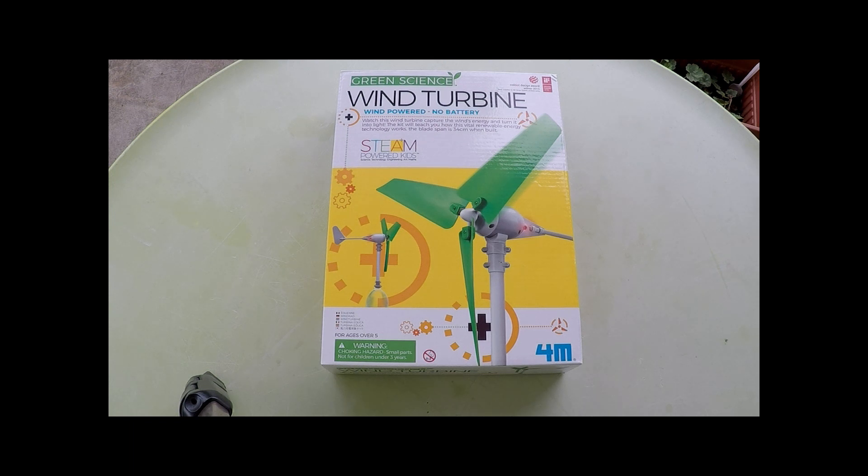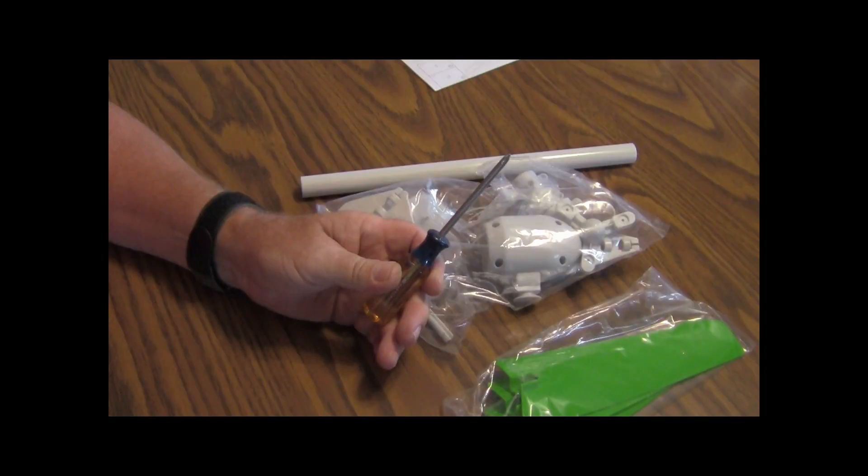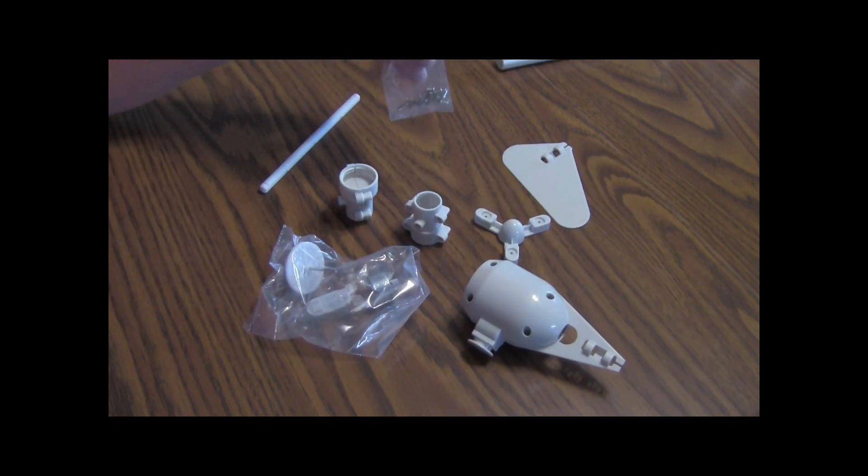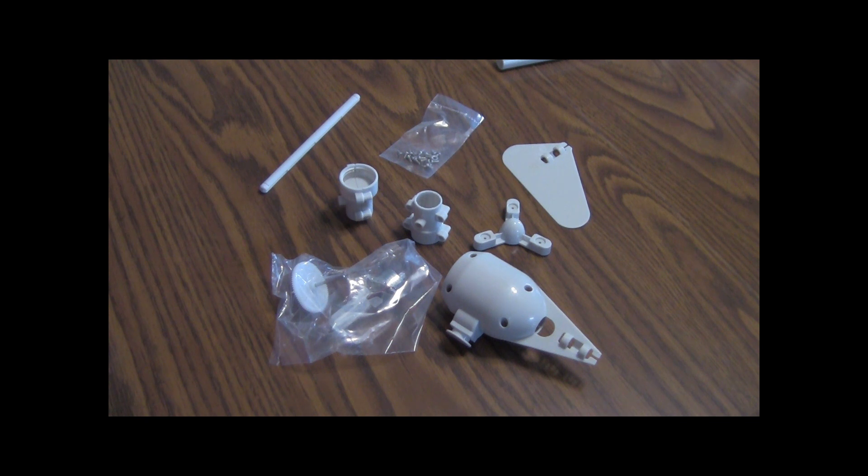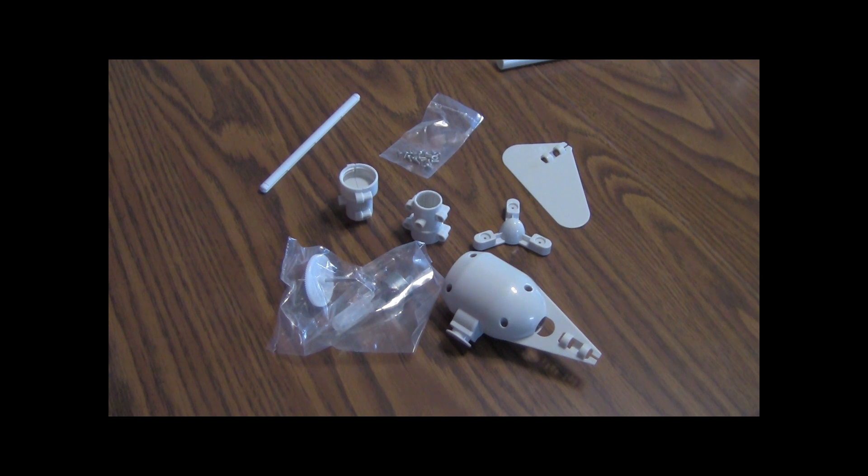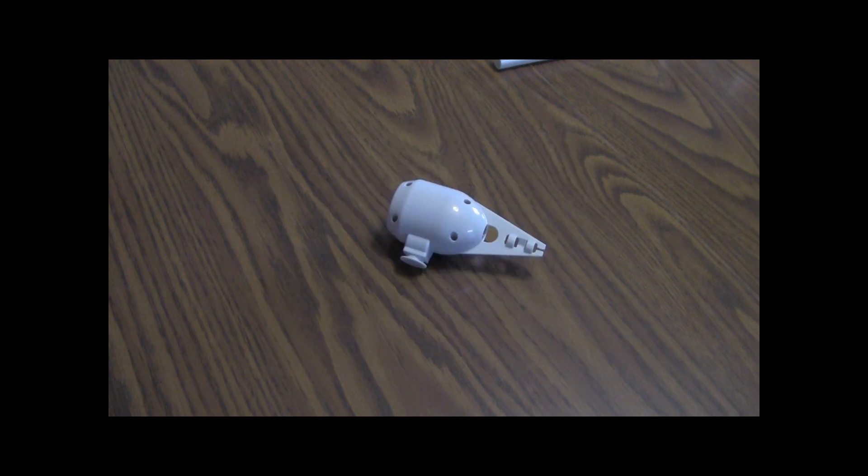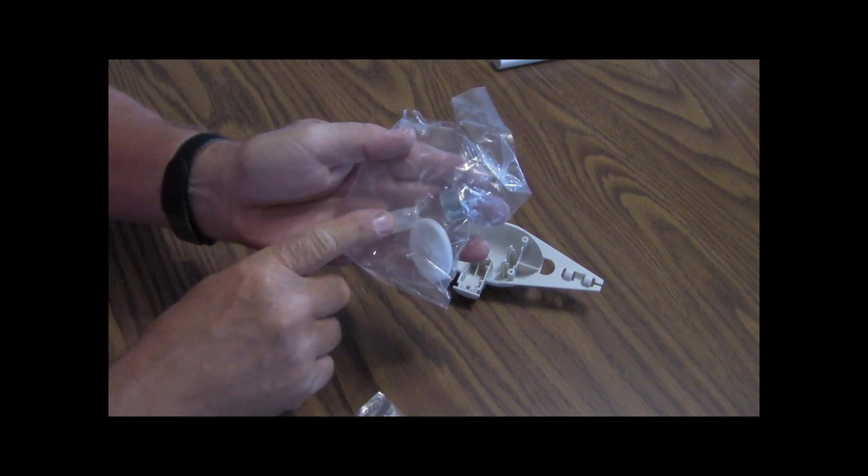This is everything that's in the box. You're gonna need a small Phillips head screwdriver. That's your screws, your housing, a couple other pieces like your motor with your light. I'll go ahead and start putting it together. The first thing you want to do, take your housing and just pull it apart and separate it.